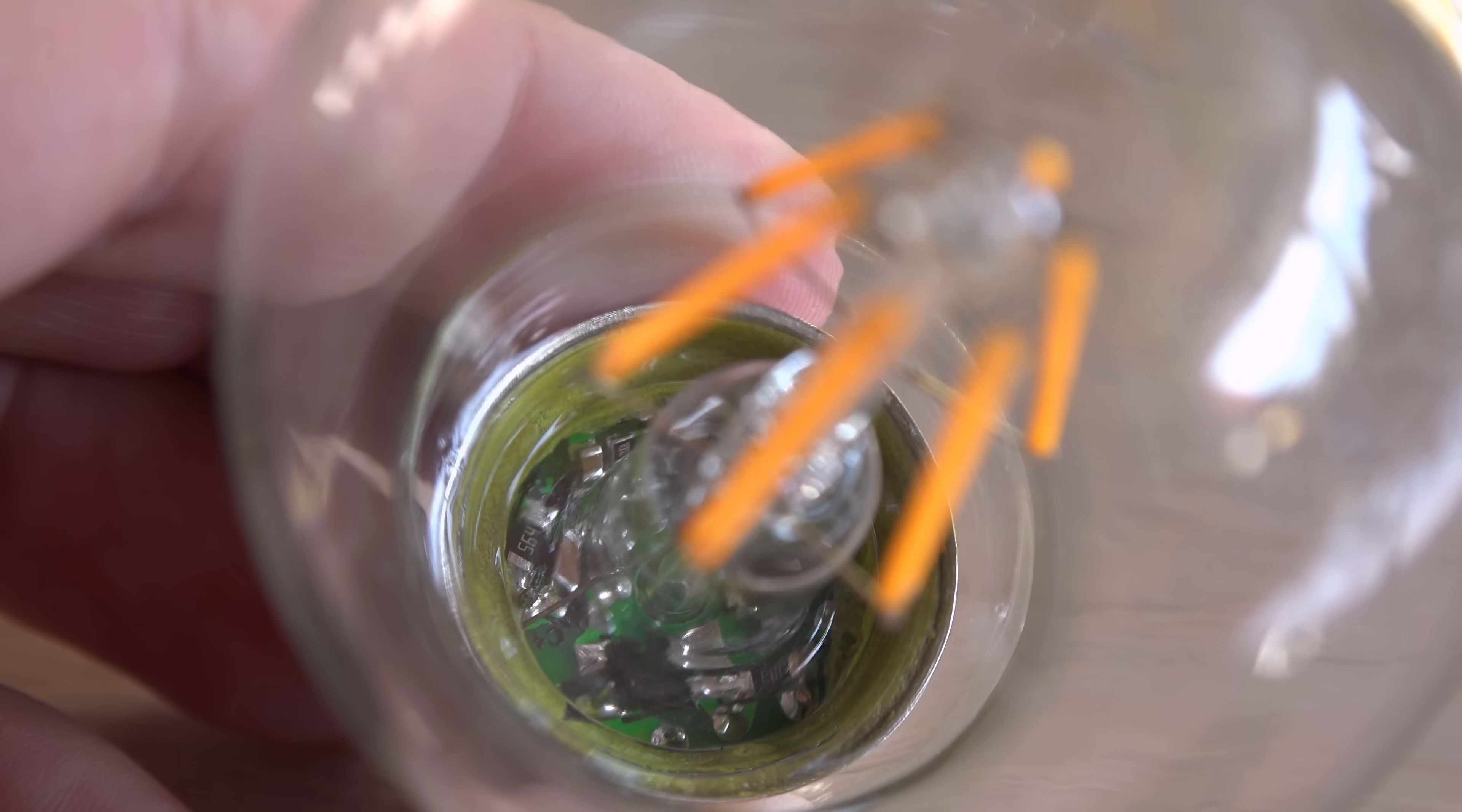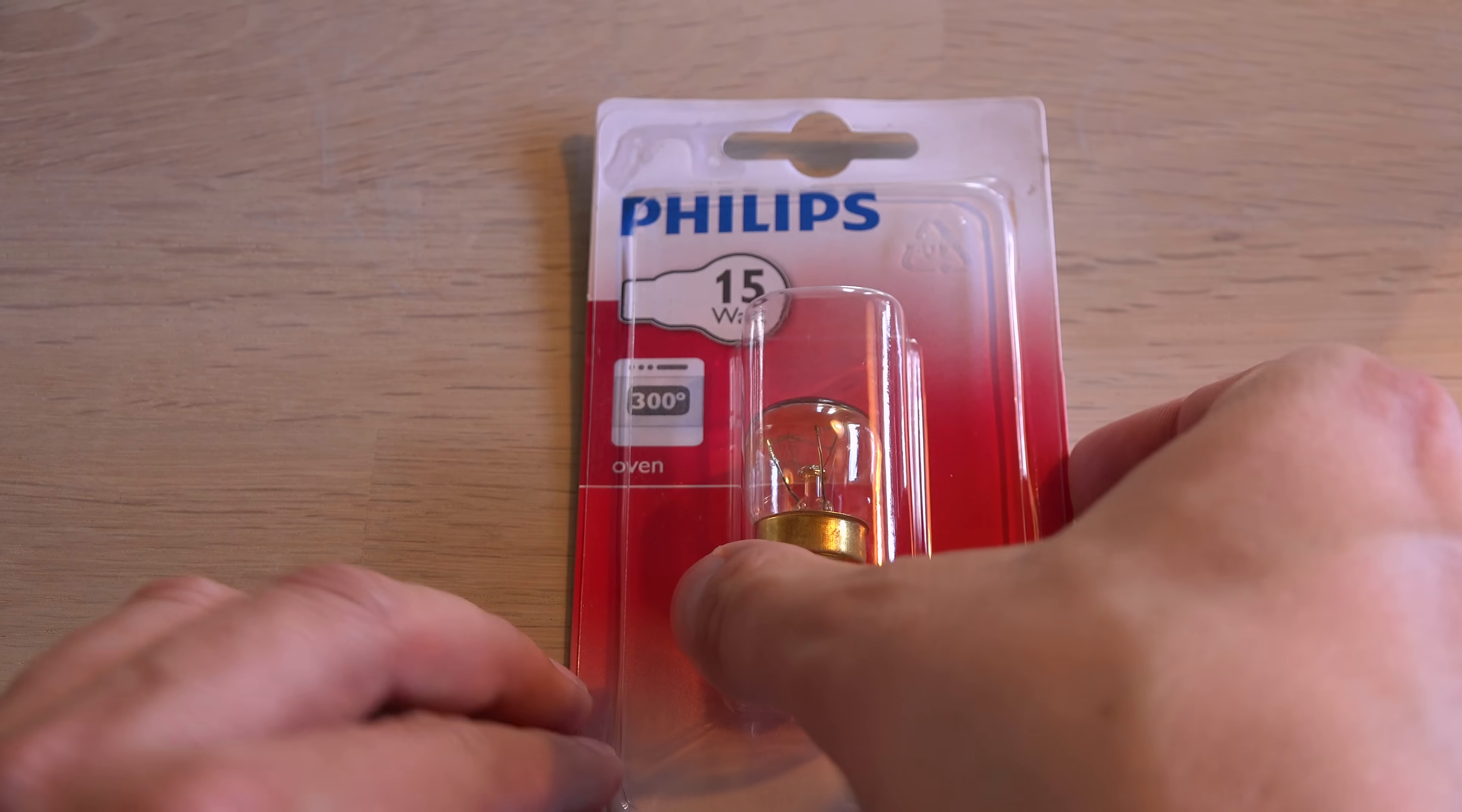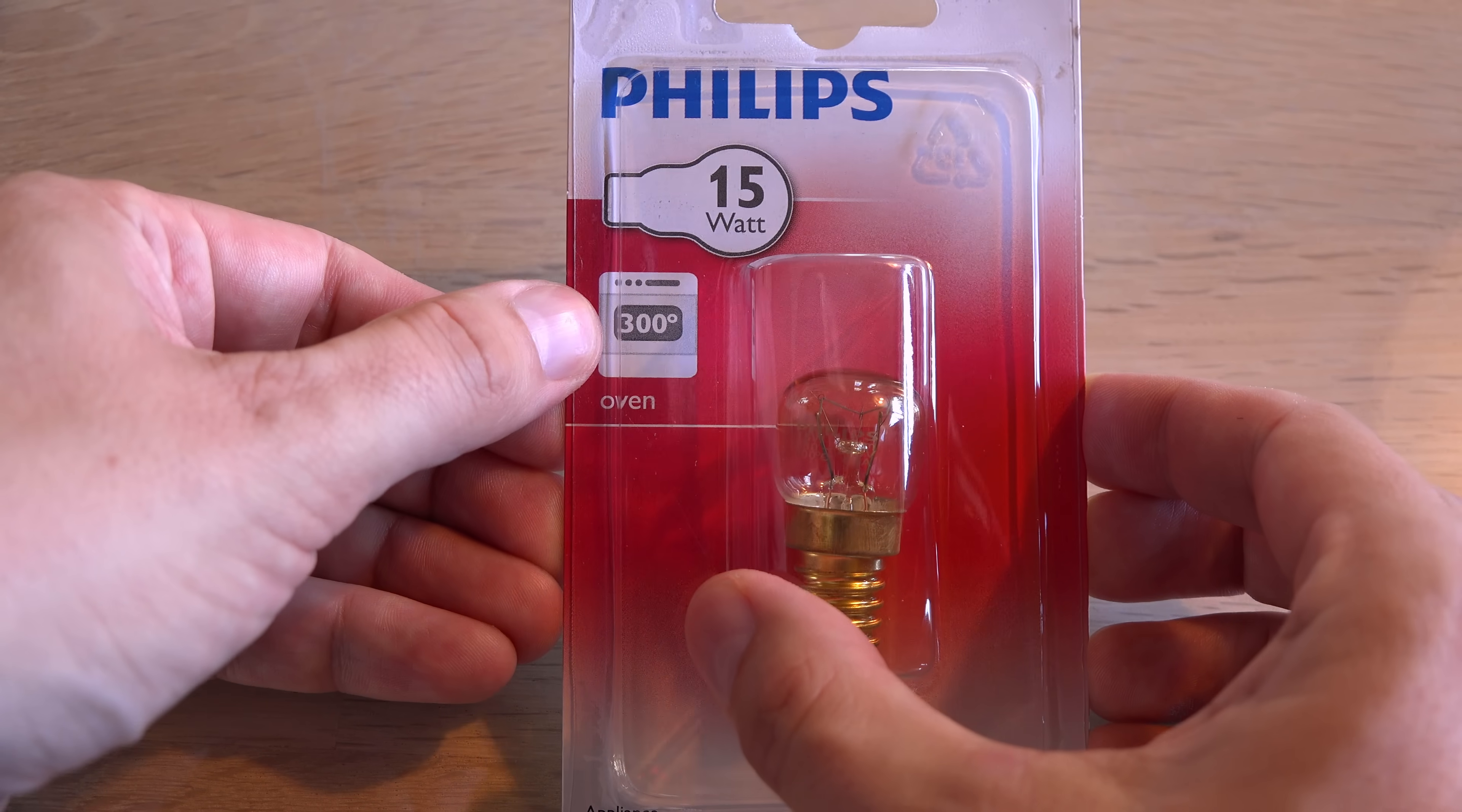And the electronics don't like excessive heat so LEDs aren't suitable for oven lights. This incandescent bulb is rated to 300 degrees C. No electronics to melt.